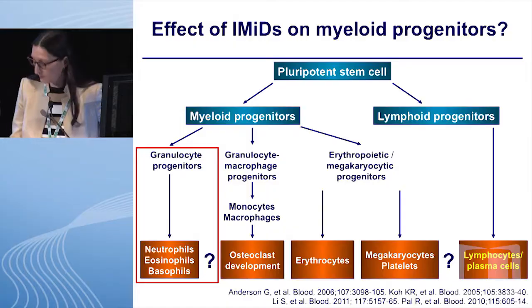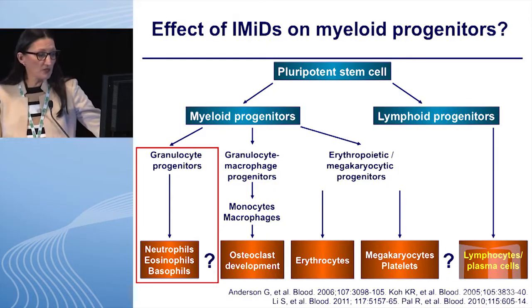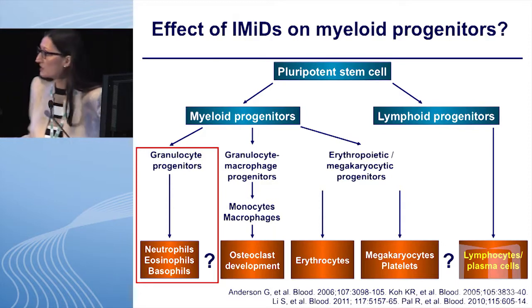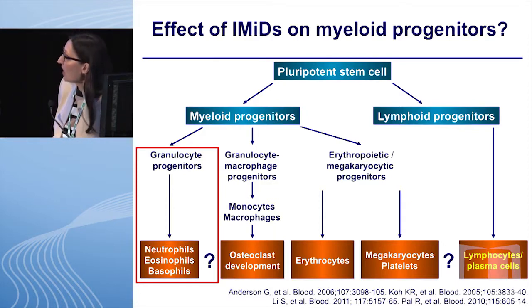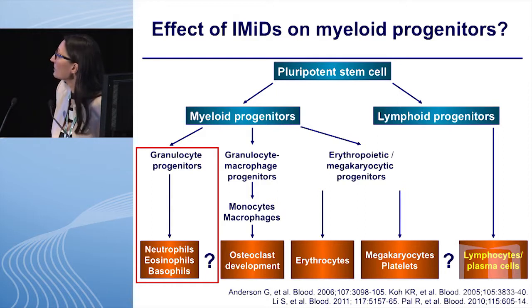So we had two questions. First of all, what is the effect of IMIDs on hematopoietic stem cells? Is this effect toxic? And second, why do IMIDs inhibit the mobilization of CD34 cells? For this purpose, our laboratory spent the last 10 years on the evaluation of the effects of IMIDs — lenalidomide and pomalidomide — on hematopoietic progenitors.